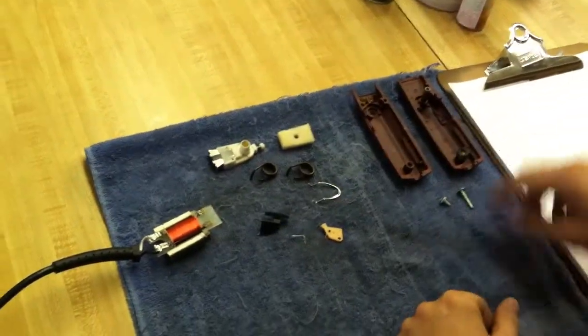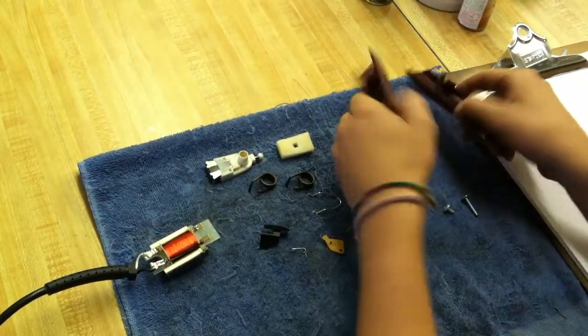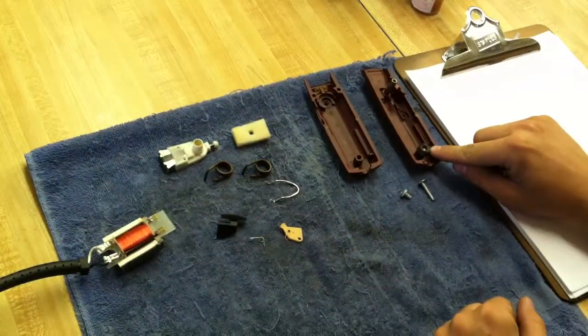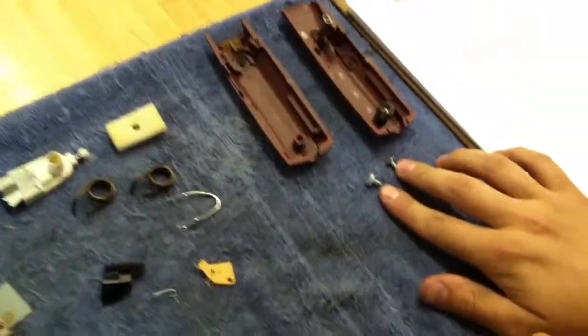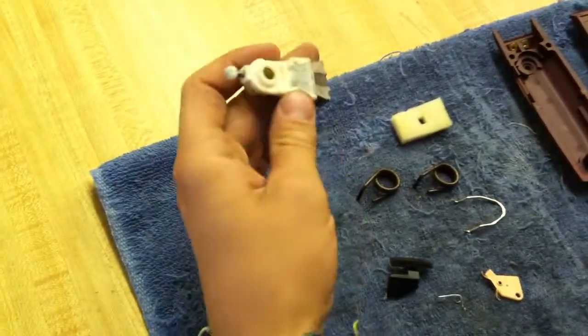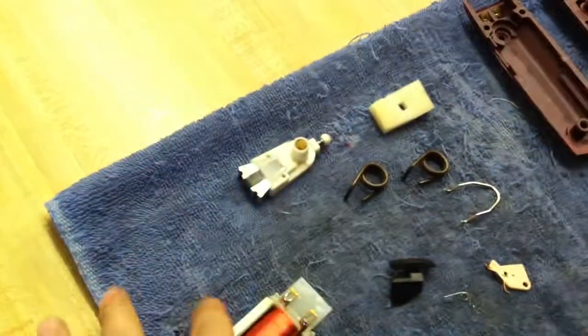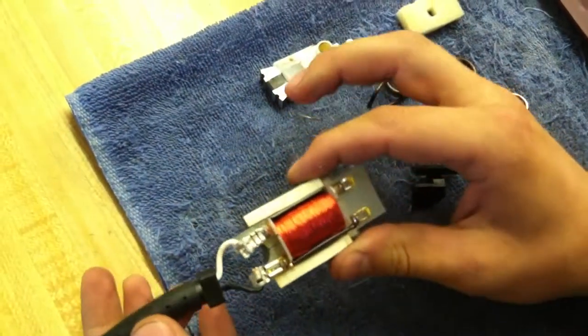Alright, we're going to put together an Oster T finisher, just going to walk through your parts with you. We've got the housings, the lower and upper, there's a little rubber seal on there too. We've got the housing screws, we've got our magnet arm, the field, and then the cord with that.